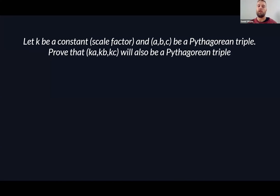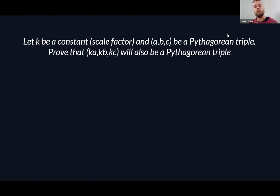This was the challenge question I gave everyone last week — to prove using algebra that if you've got a Pythagorean triple ABC, then KA, KB, and KC would also be a Pythagorean triple, where K is that same constant. So I'm introducing you to what's known as a mathematical proof. Up until now you probably haven't done many proofs. This is something you tend to start doing in year 11 or year 12 mathematics, and also at university level. You'll see more of them in specialist mathematics than in maths methods.